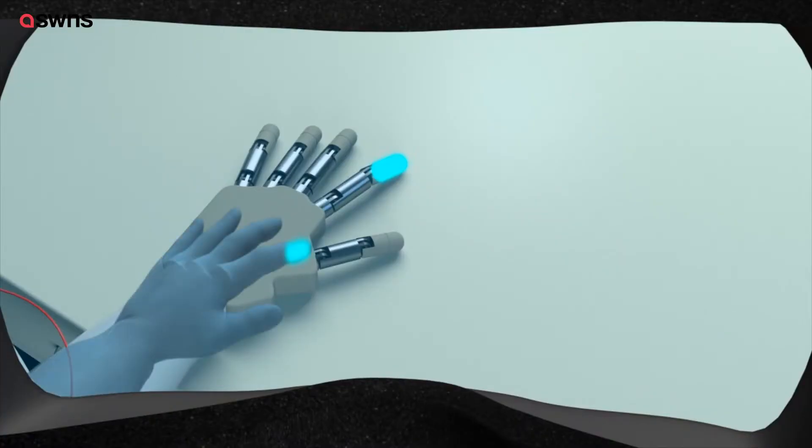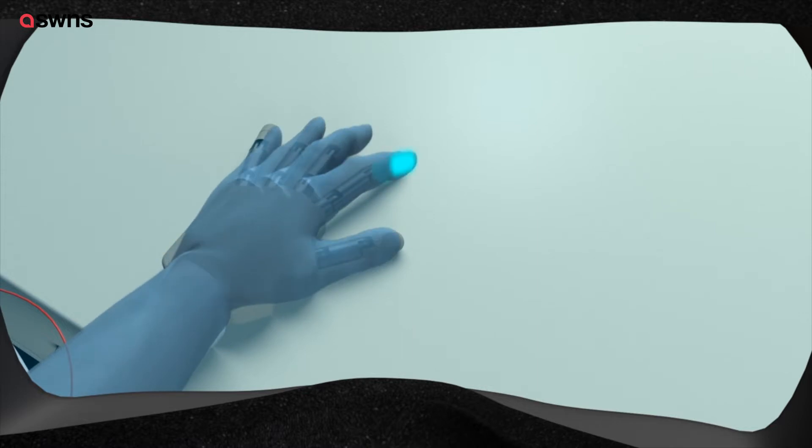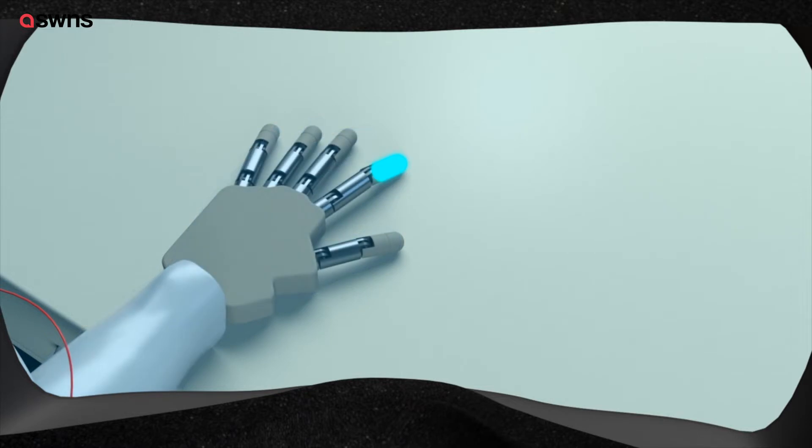What's really new about our approach is that we can restore the perception of the phantom limb and make it grow into the physical device, into the prosthetic device, so that it fits the prosthetic device.